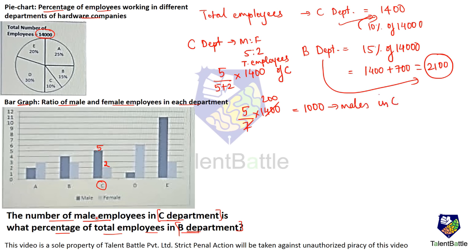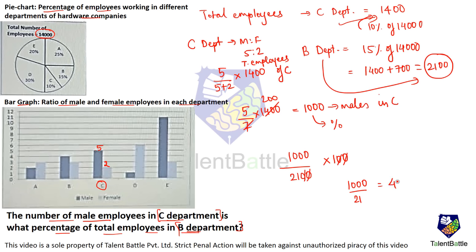We need to convert 1,000 into a percentage of total employees in B department. So it's (1,000 / 2,100) × 100, which equals 47.61%. The number of male employees in C department is 47.61% of the total employees in B department.